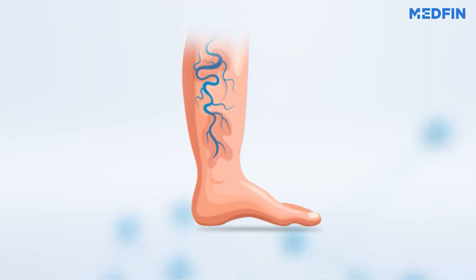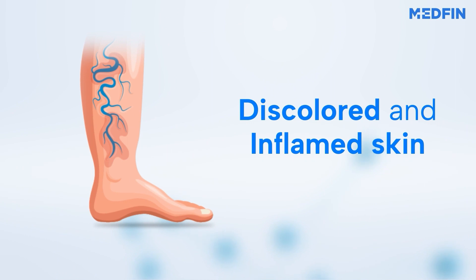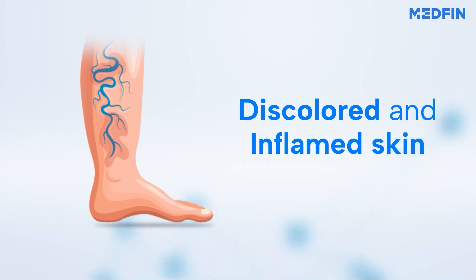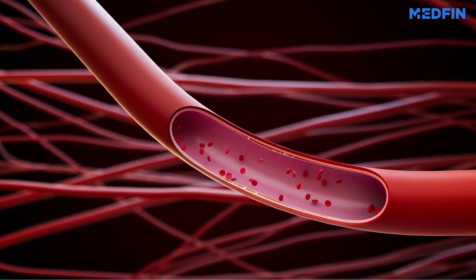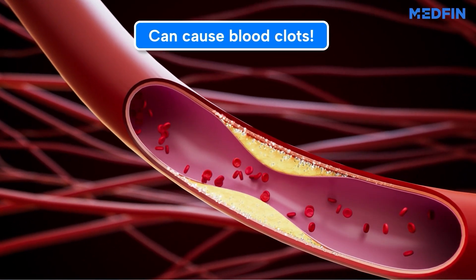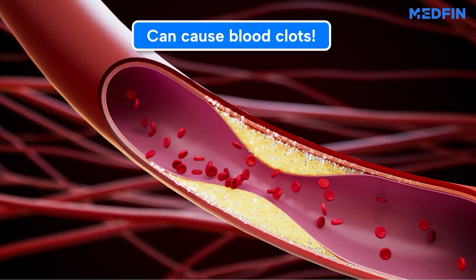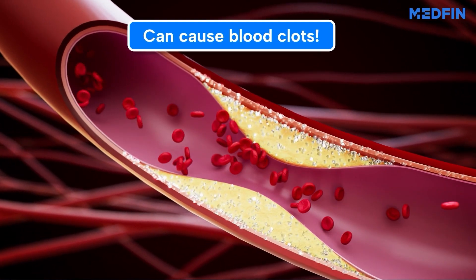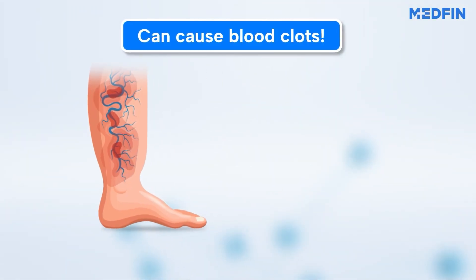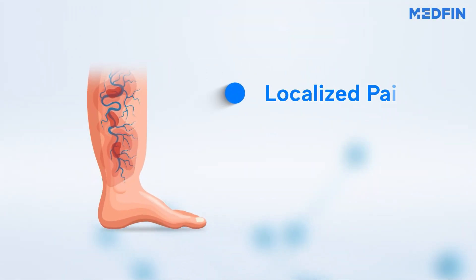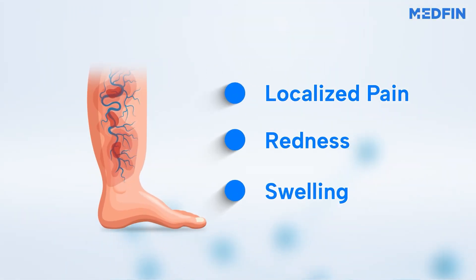Over time, the chronic increase in pressure and changes in blood flow can lead to skin changes, such as thinning of the skin and inflammation. In some cases, varicose veins can lead to the formation of superficial blood clots, known as superficial thrombophlebitis. This condition can cause localized pain, redness, and swelling.